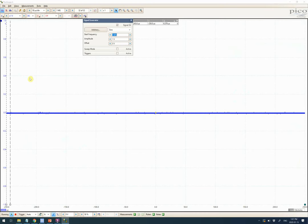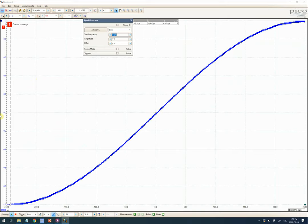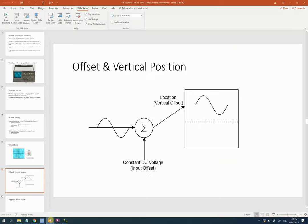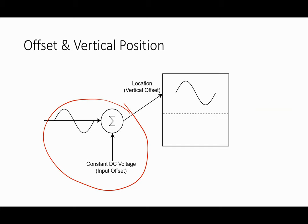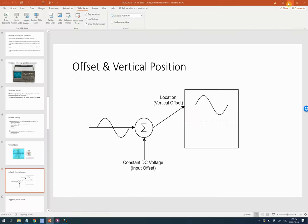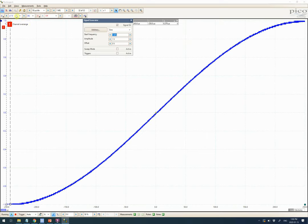And the other thing I did mention — there is this thing called an input offset. Some scopes, like the Pico scope I have here, have an ability to add a voltage to your input. So it's a tiny bit different than just moving the zero volt location on the screen — what it actually does is it adds a voltage with like an analog summer circuit to the input. You may want this if you have a signal that's at a 1 volt offset and you want to bring it down to 0 volts.